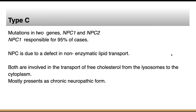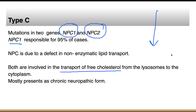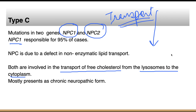In type C, which is totally different, there is mutation in two genes: NPC1 and NPC2. NPC1 is responsible for approximately 95% of cases. These genes are responsible for lipid transport — specifically the transport of free cholesterol from the lysosome to the cytoplasm. When absent, free cholesterol stays back in the lysosome. Type C is therefore mainly a disease of the transport system, not of an enzyme. Some patients present in the infantile form with neonatal hepatitis and early death, while others present as a chronic form.